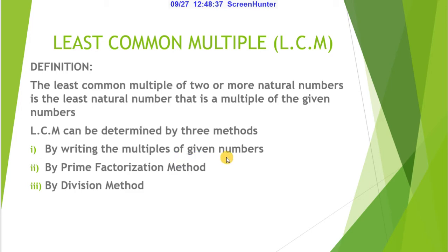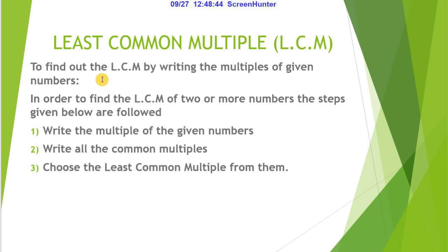The first method is by writing the multiples of given numbers. To find out the LCM by writing the multiples of given numbers, the steps given below are followed: Write the multiples of the given numbers, write all the common multiples, and choose the least common multiple from them.